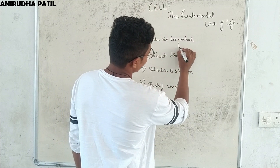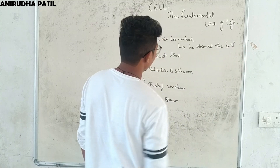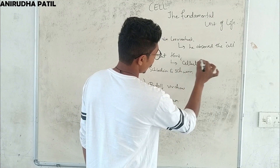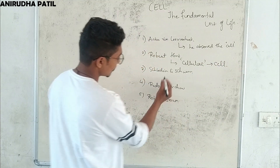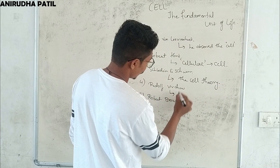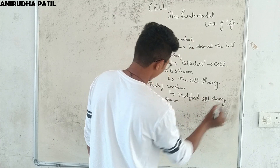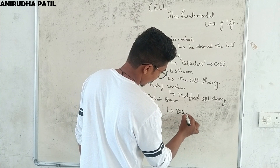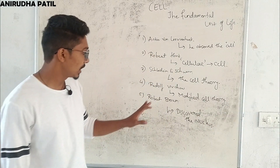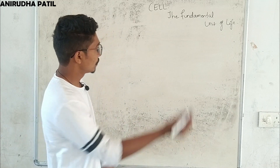Anton van Leeuwenhoek observed the cell for the first time. Robert Hooke gave the term 'cellula,' which is now replaced as 'cell.' Schleiden and Schwann gave the cell theory. Rudolf Virchow modified the cell theory, and Robert Brown discovered the nucleus of the cell. Remember these five names as we go further.